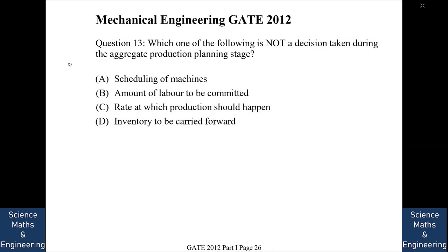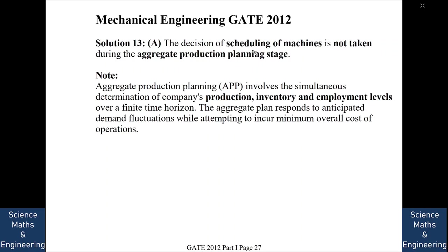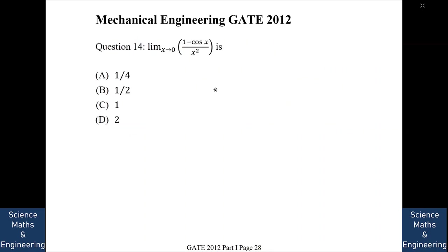Which one of the following is NOT a decision taken during aggregate production planning? Options are: scheduling of machines, amount of labor to be committed, rate of production, or inventory to be carried forward. The answer is A — scheduling of machines. In aggregate production planning, we determine production, inventory, and employment levels over a finite time horizon of up to 18 months to minimize operational costs, but do not schedule which machine does which job.